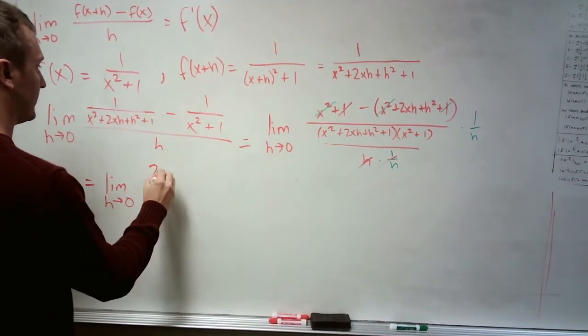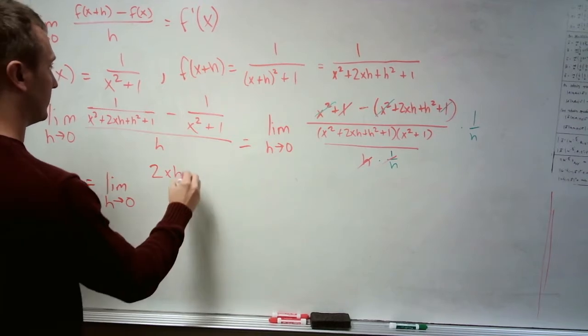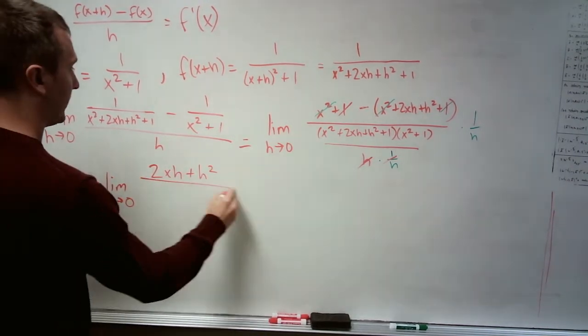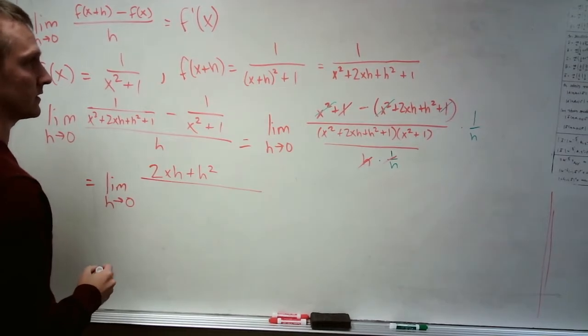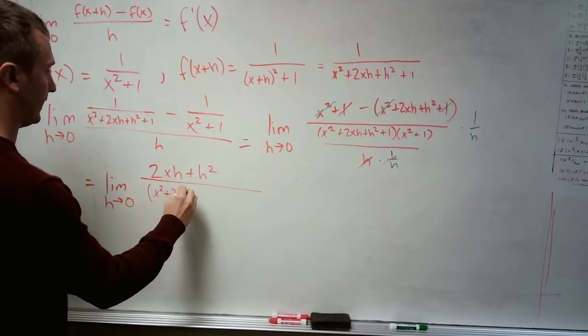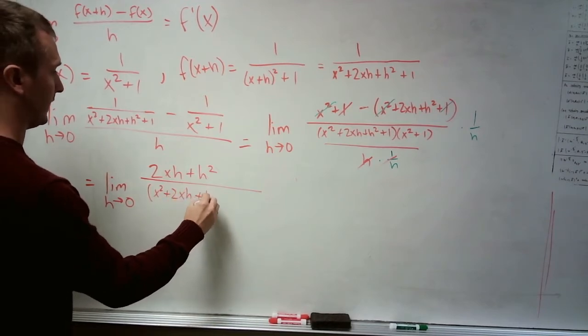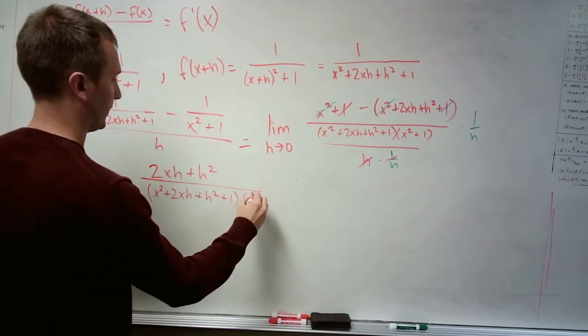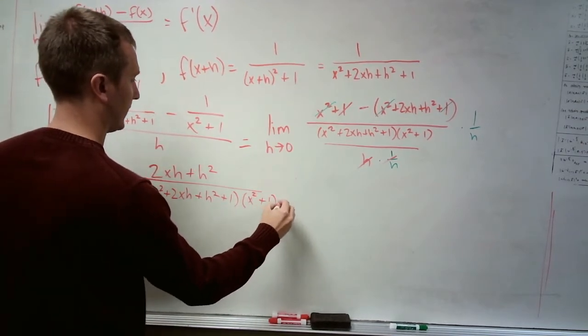We've got left up top 2xh plus h squared divided by this nasty looking denominator, x squared plus 2xh plus h squared plus 1